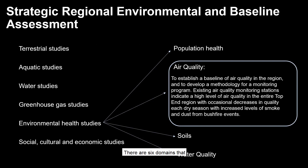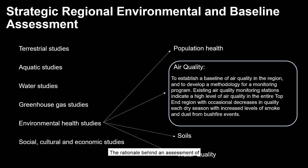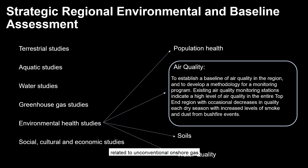There are six domains that comprise this SHRIBA being undertaken by the Northern Territory Government. Air quality is included in the scope of works for the environmental health domain. The rationale behind an assessment of air quality in the Beedaloo Subbasin is to understand the current air quality values in the region as a baseline against which changes related to unconventional onshore gas industry developments can be assessed, with particular focus on the impacts of changes in air quality on human health and wellbeing as well as amenity.